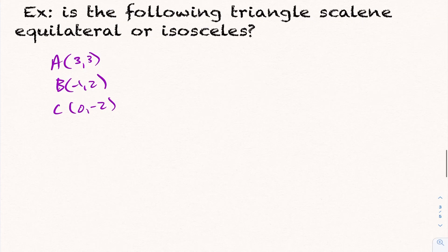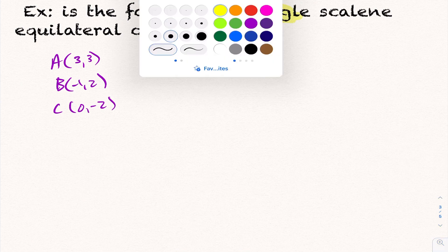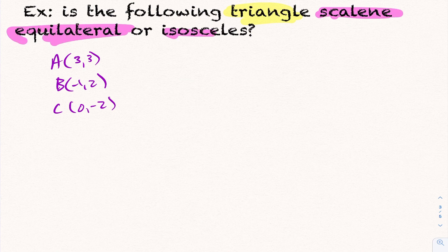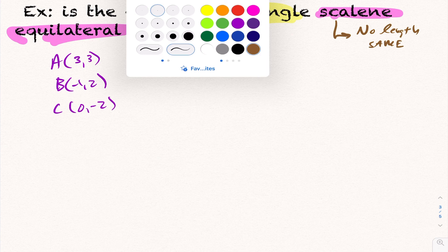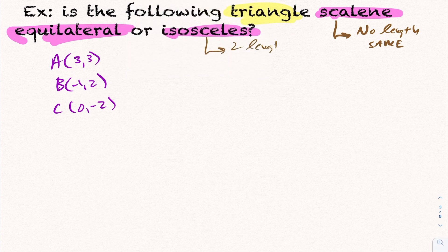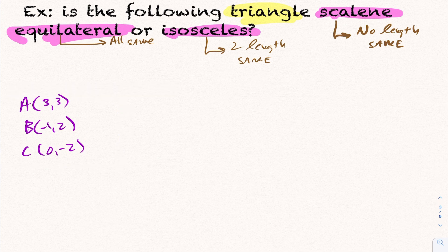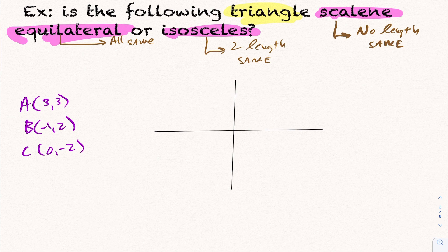Let's look at this next example. It asks: is the following triangle scalene, equilateral, or isosceles? A scalene triangle has no side lengths the same; an isosceles triangle has two lengths the same; and an equilateral triangle has all three lengths the same. This is clearly an argument about length, which we'll find using the distance formula. It's useful to draw a rough grid and plot points A, B, and C to see where they are.